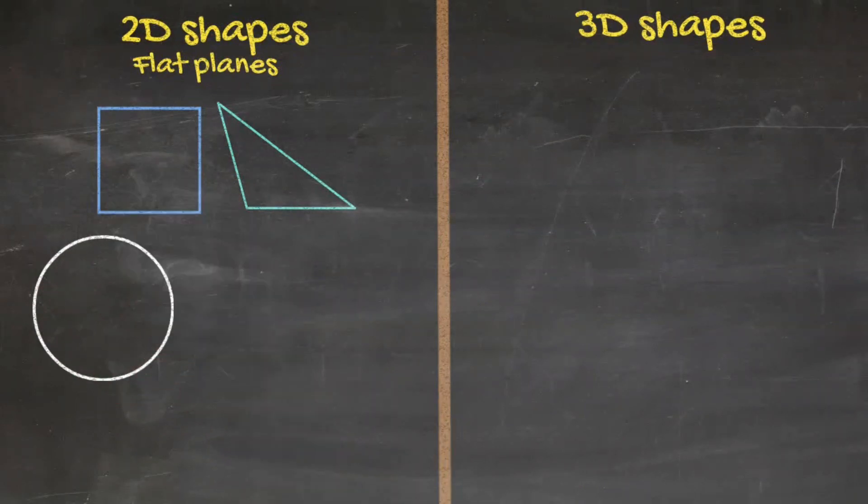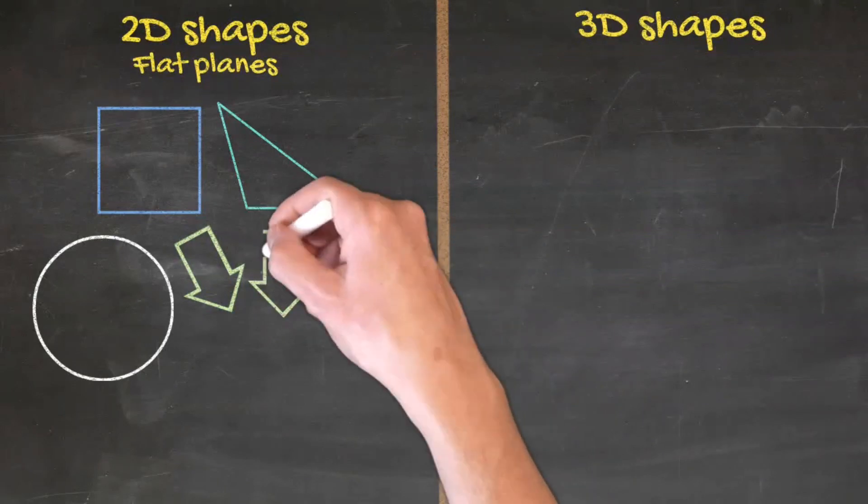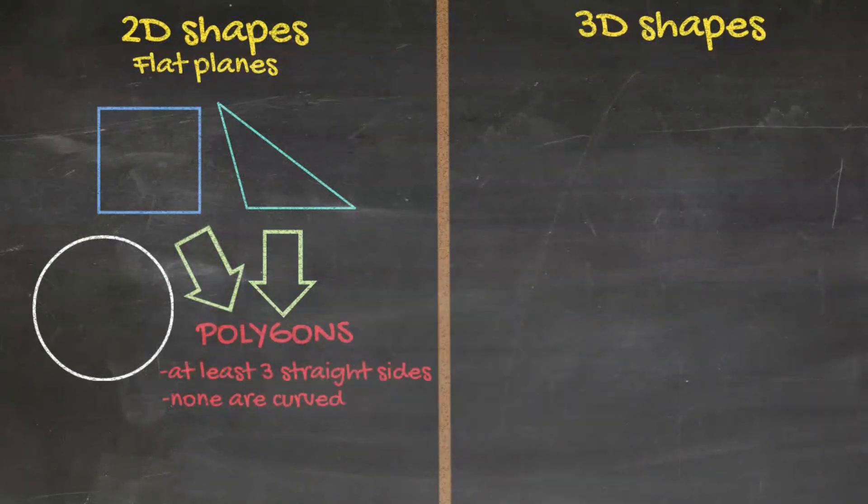About the square and the triangle, they are also called polygons. Polygons are 2D shapes that have at least 3 sides, none of which are curved.